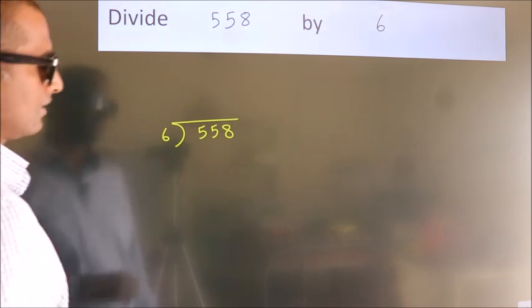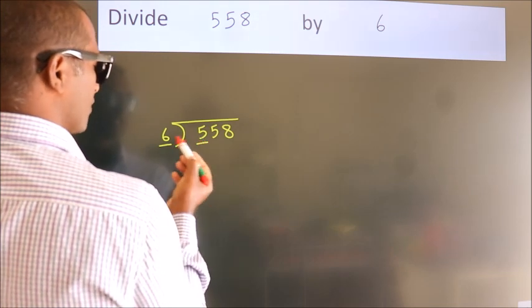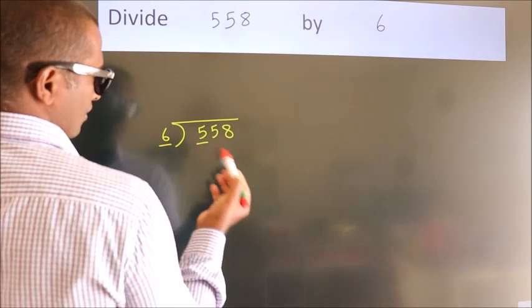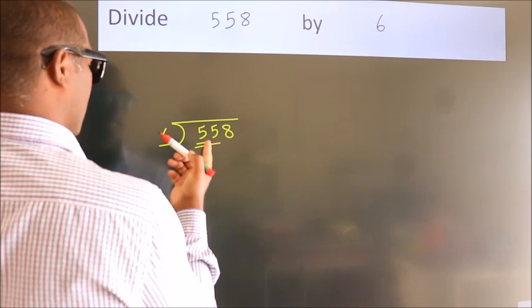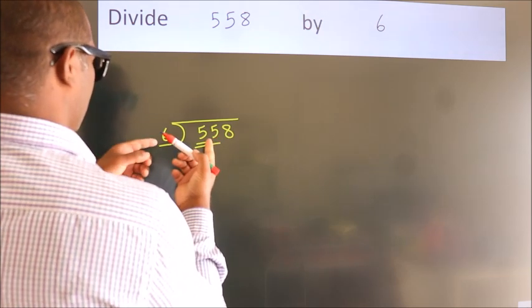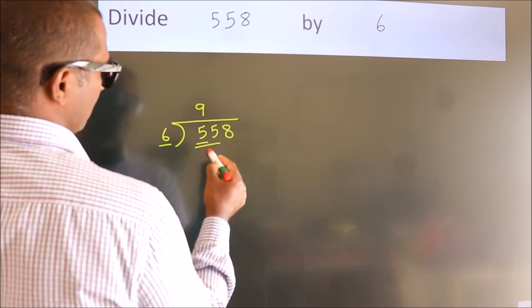Next, here we have 5, here 6. 5 is smaller than 6, so we should take 2 numbers: 55. A number close to 55 in the 6 table is 6 nines, 54.